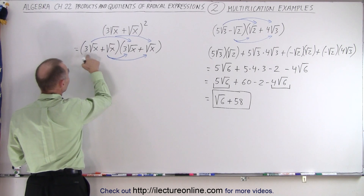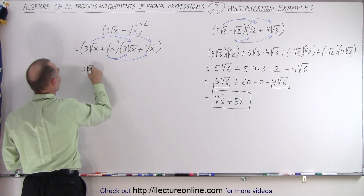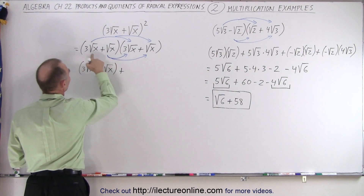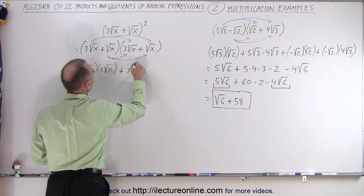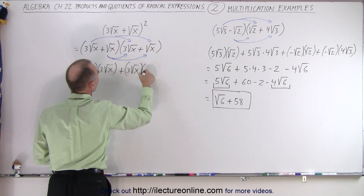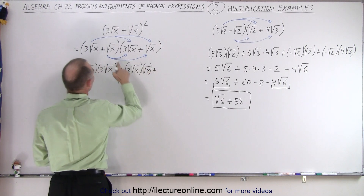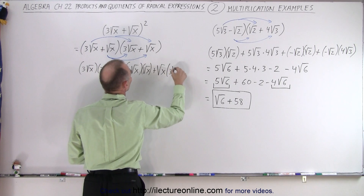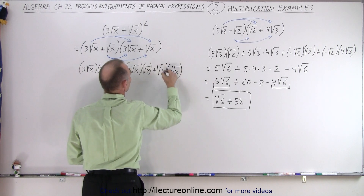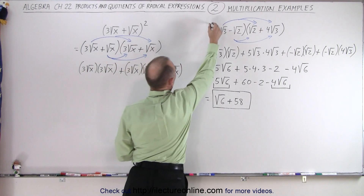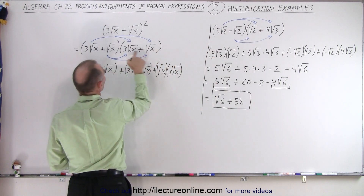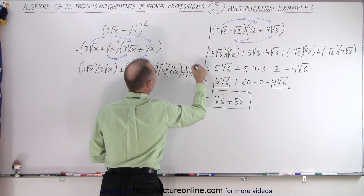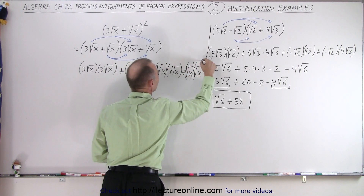First we have this times this: three times the square root of x times three times the square root of x. Plus this term times this term: three times the square root of x times the square root of x. Then this term times this term: the square root of x times three times the square root of x. And finally these two multiply together: plus the square root of x times the square root of x.